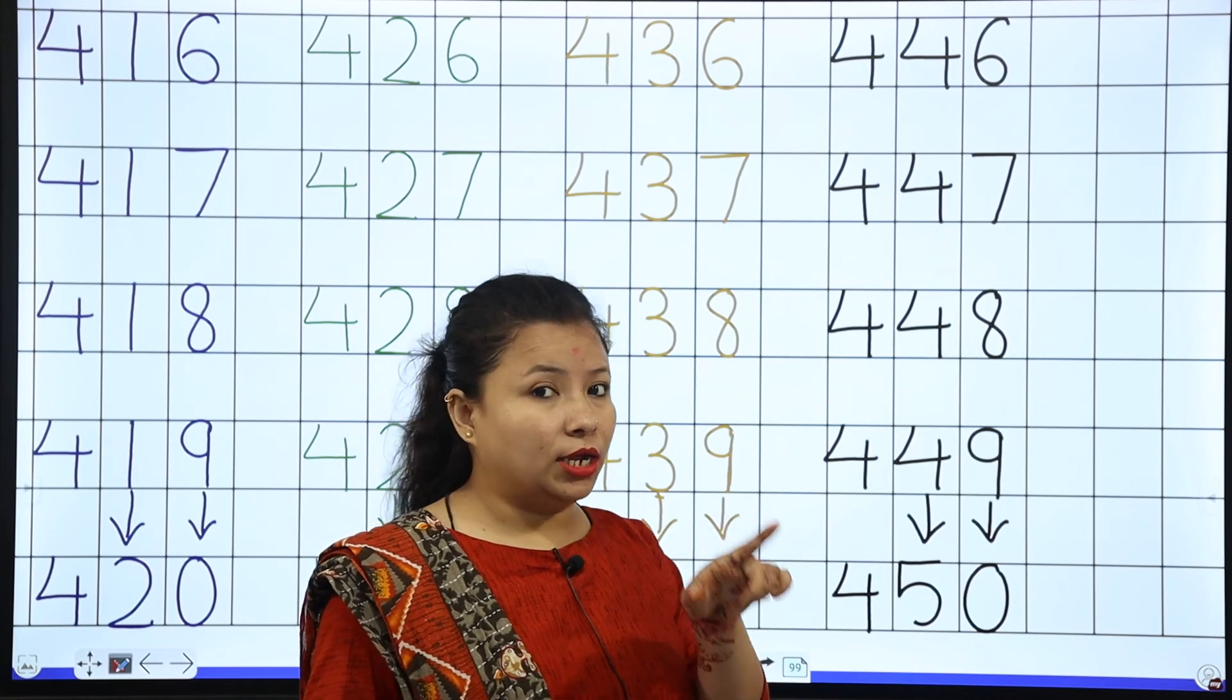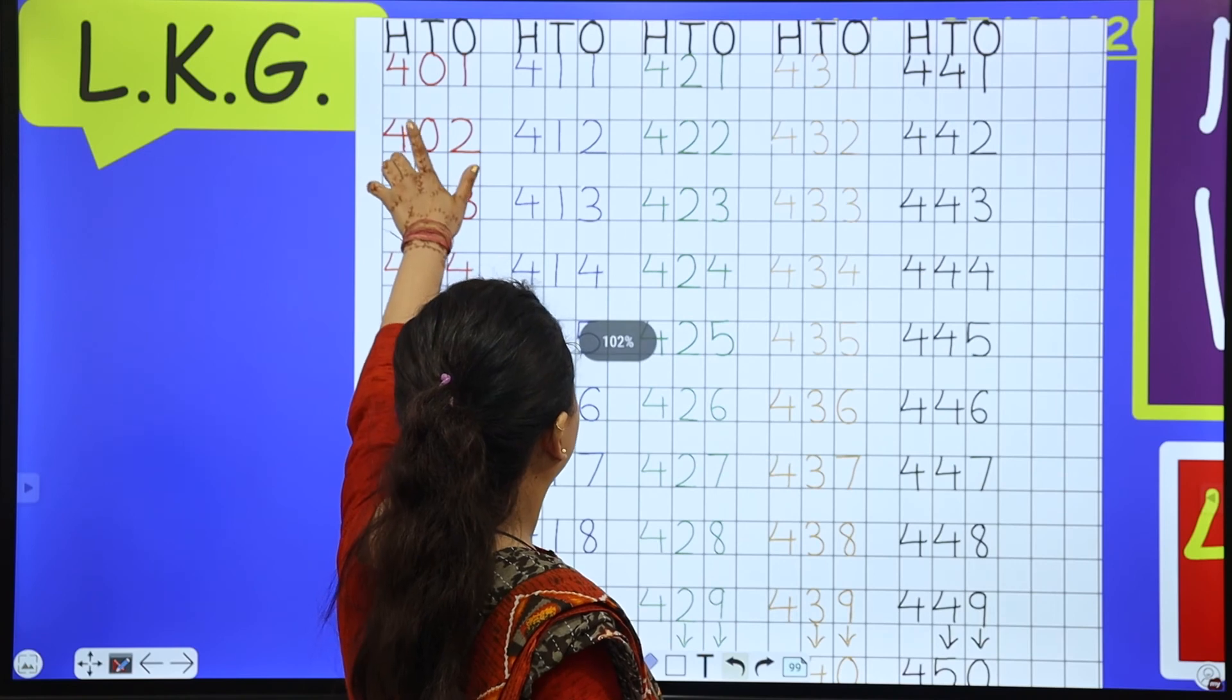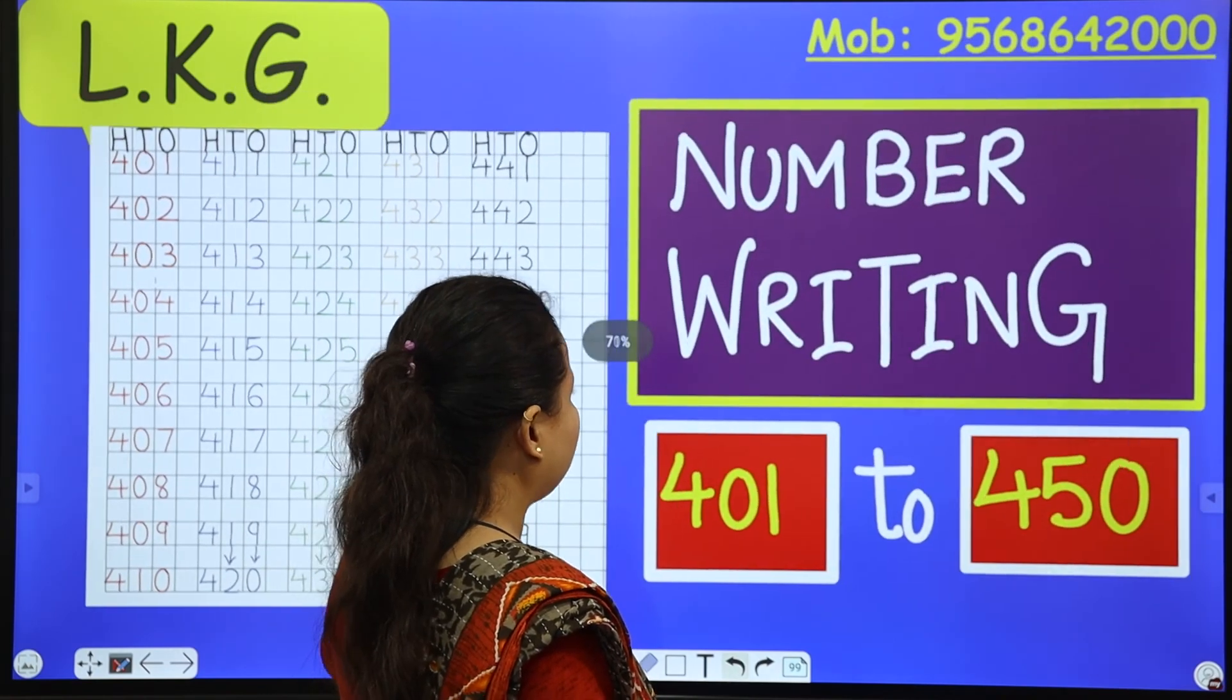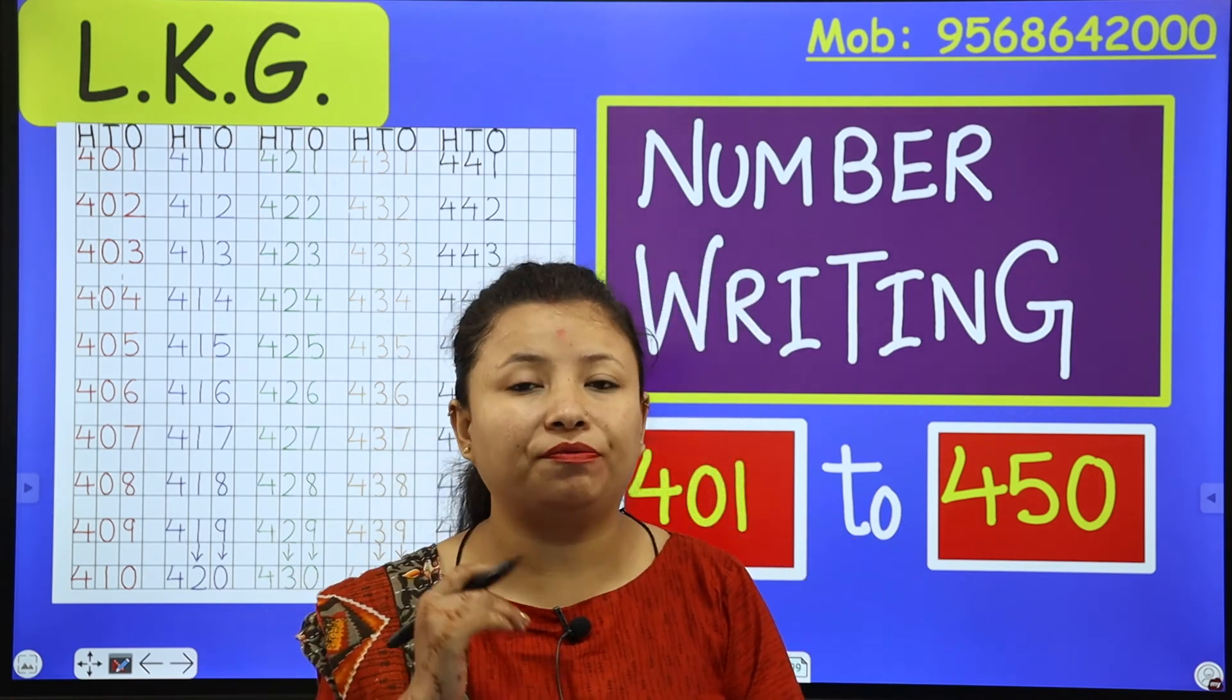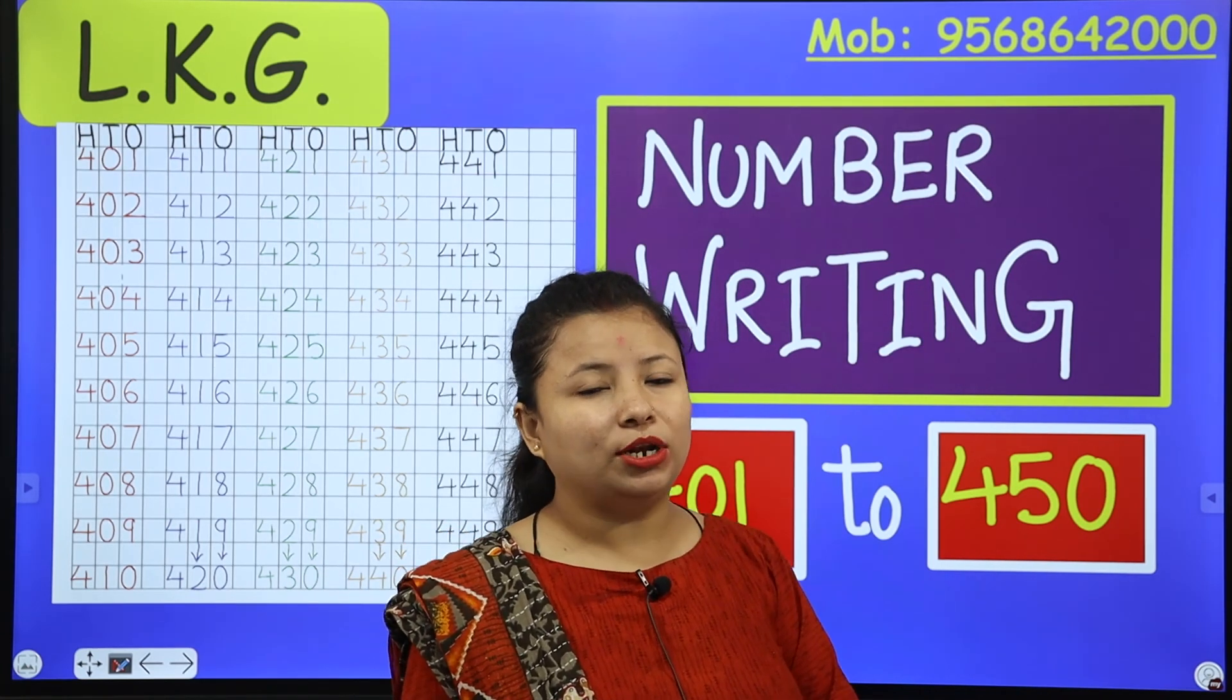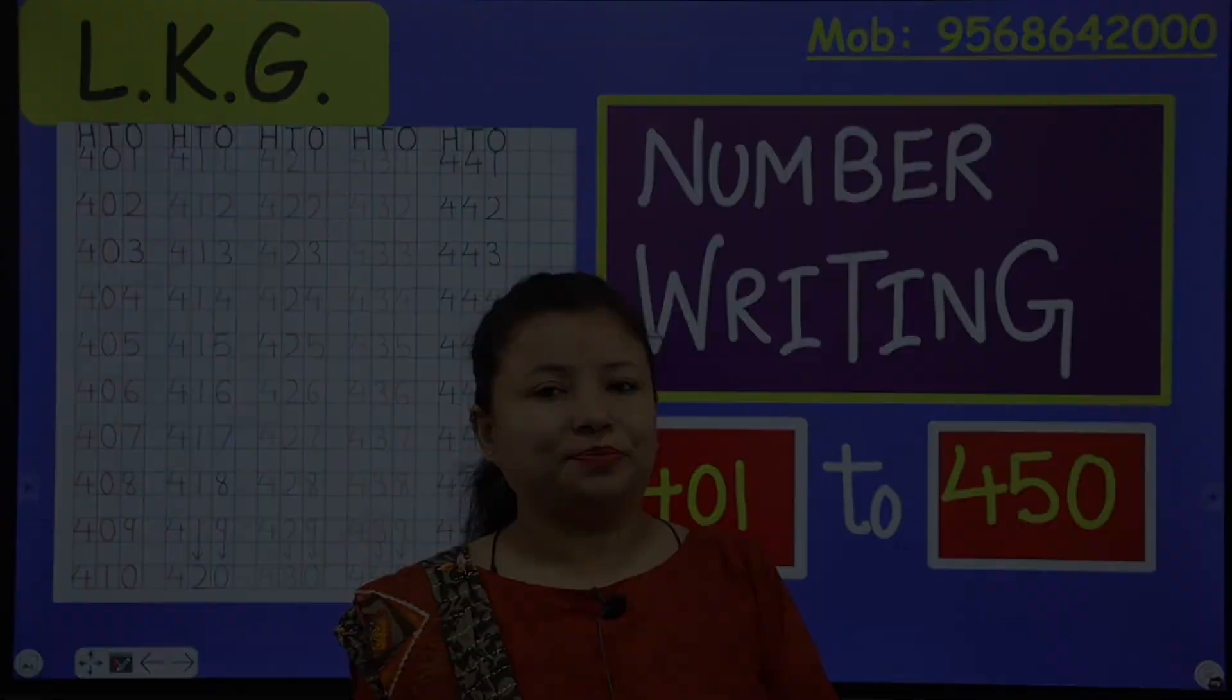Now next line start with 451, but today we will do 451 in my next class. Okay. So these are the numbers from 401 to 450. Now what you have to do, it's homework time. Write this number writing in your fair notebook and prepare for dictation class. Is that okay? Now it's time to leave, so I will come back very soon. So till then, goodbye and enjoy the day.